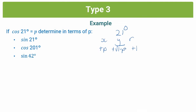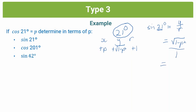Now we can use these variables to solve the questions. Sin 21 degrees equals y over r by definition. Since the angle here matches the angle we solved x, y, and r for, we substitute directly: sin 21 = √(1 − p²) over 1 = √(1 − p²). This is the grade 10 type of question.